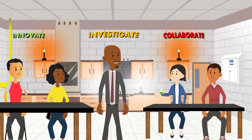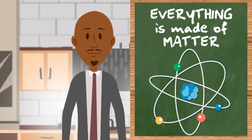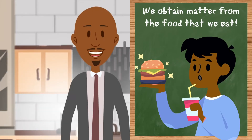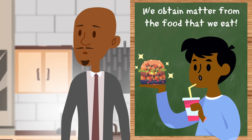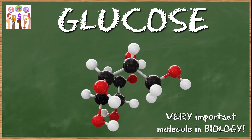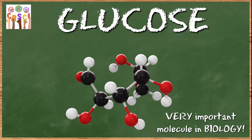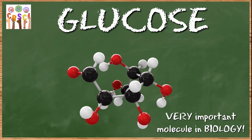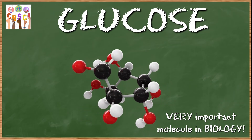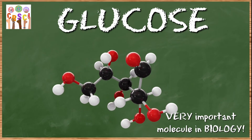Ten points to you. We need matter because that's what we're made of — we get matter from the food we eat. Some of it is just more important than others. Glucose is one of those very important pieces of matter for us, and we're going to talk about glucose a lot in this course, so get to know her.